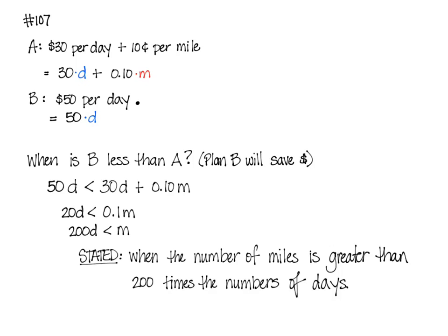If you're thinking about that just in the real world, we kind of think of it more as that you have to drive more than 200 miles each day on average. Then, as long as you did that, then Plan B would save you money. If you did less than 200 miles a day on average, then you should go with Plan A.